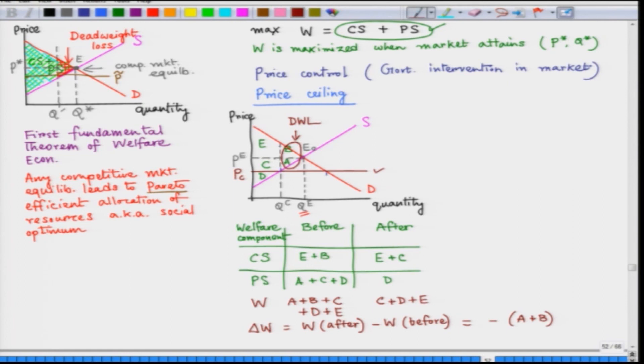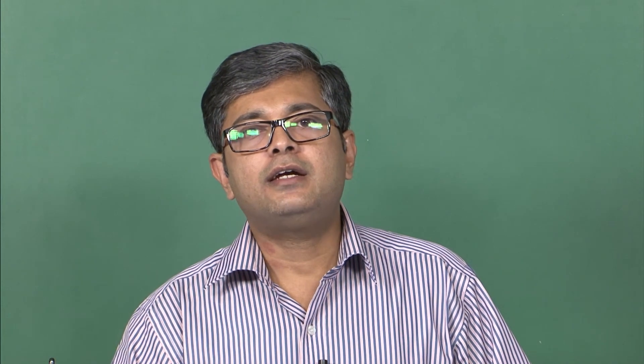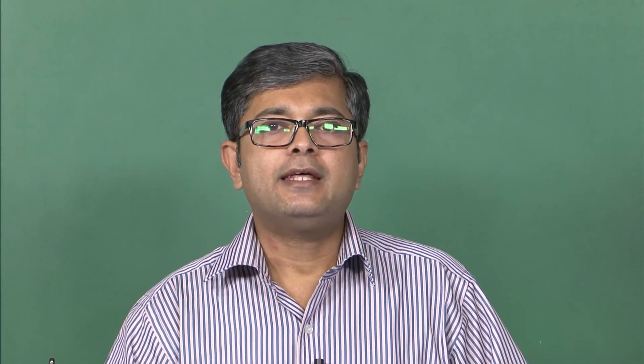So we are done with our discussion on welfare implications of price ceiling. We have started discussing different types of violations of perfectly competitive market assumptions and their implications on social welfare maximization. In the next lecture we are going to study what will happen if the government decides to impose a unit tax on the commodity and what will be its implication on social welfare. We will see you later.